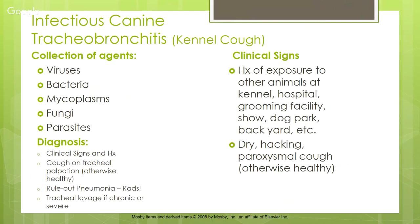If we have chronic or severe tracheobronchitis unresponsive to usual treatment, we can do a tracheal lavage for diagnostics — placing a sterile tube into the trachea, flushing with a little saline, and immediately aspirating it back out to identify cells, bacteria, or fungus. Clinical signs include a history of exposure to other animals at kennels, hospitals, grooming facilities, dog parks, or through fence contact.